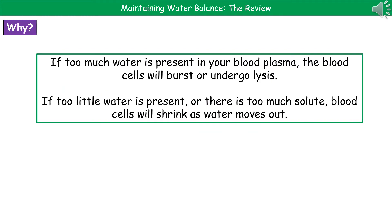Let's consider why it actually matters what the water level in our blood is. We need to think back to when we talked about osmosis in B2. If we've got too much water present in our blood plasma, then the blood cells are going to swell up and burst — we say they undergo lysis. If you put red blood cells in distilled water, the water moves into those cells until they eventually burst because there's no cell wall to stop them. Red blood cells transport oxygen, so it's not a great scenario to have them popping left, right, and centre.